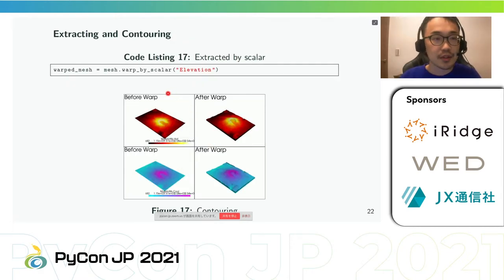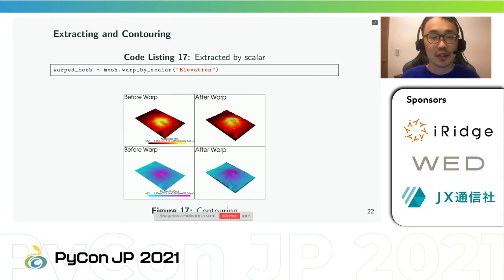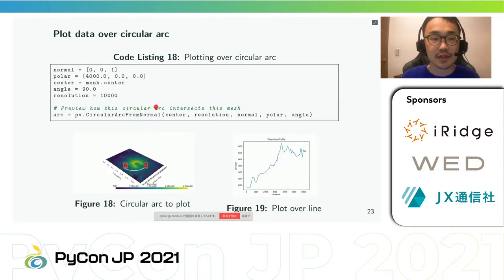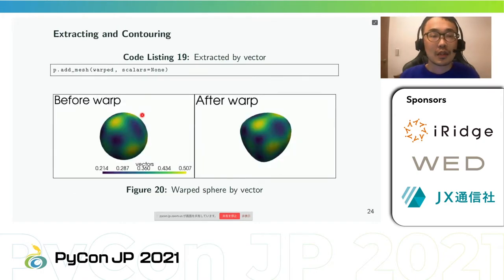Code listing 17: attributes are data values that live on either nodes or cells of a mesh. In PyVista we work with both point data and cell data, allowing easy access through data dictionaries that hold arrays for attributes on all nodes or all cells. A mesh can have a scalar field extracted using the warp_by_scalar method. We can also plot the value of a data set over a circular arc using plot_over_circular_arc_normal, and extract a vector field using warp_by_vector.